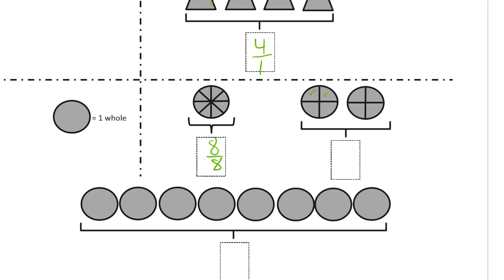And these are chopped up into fourths, and we have 1, 2, 3, 4, 5, 6, 7, 8 of them, so there's 8 fourths.